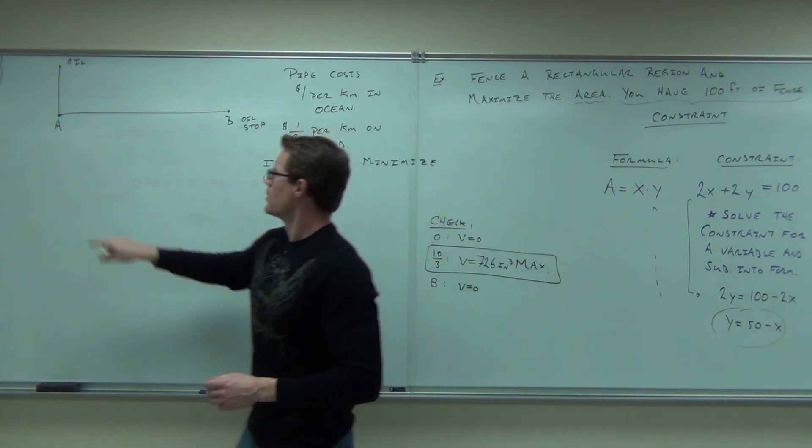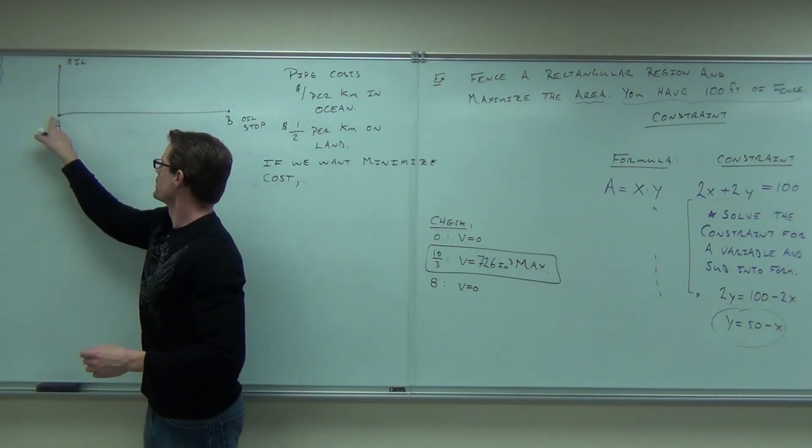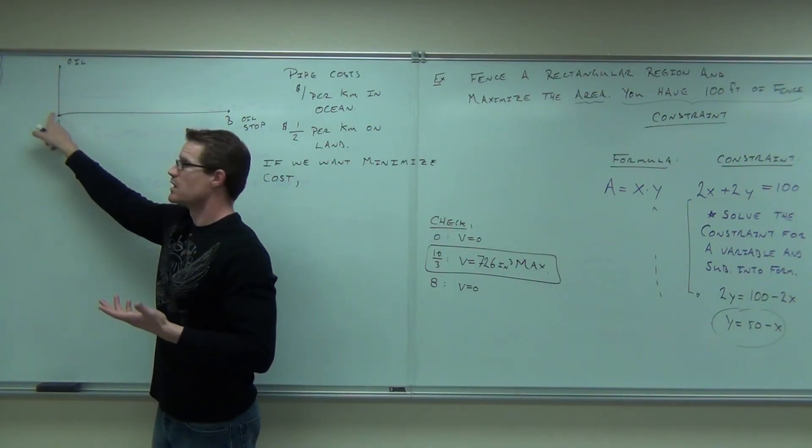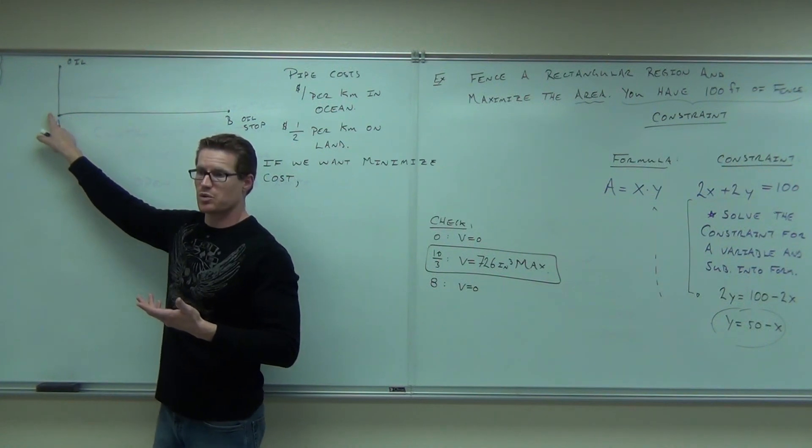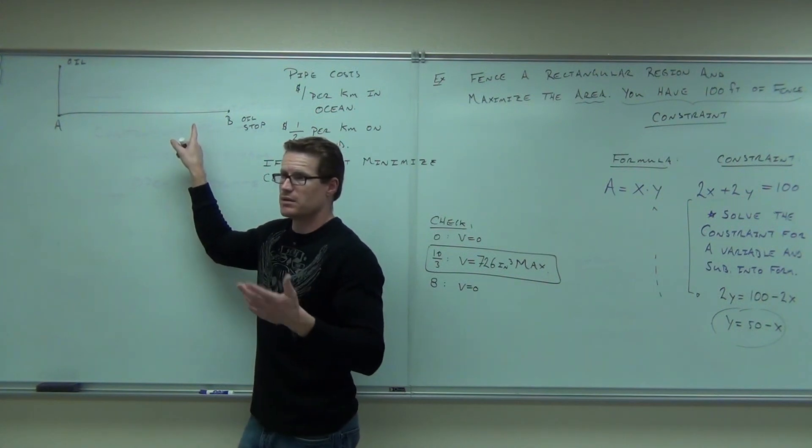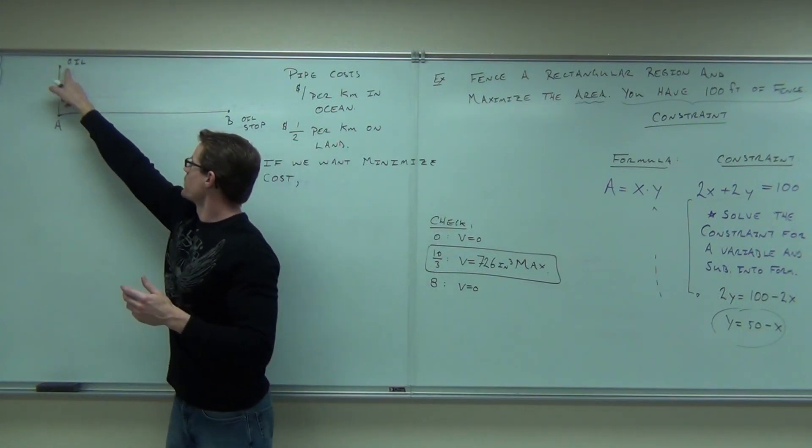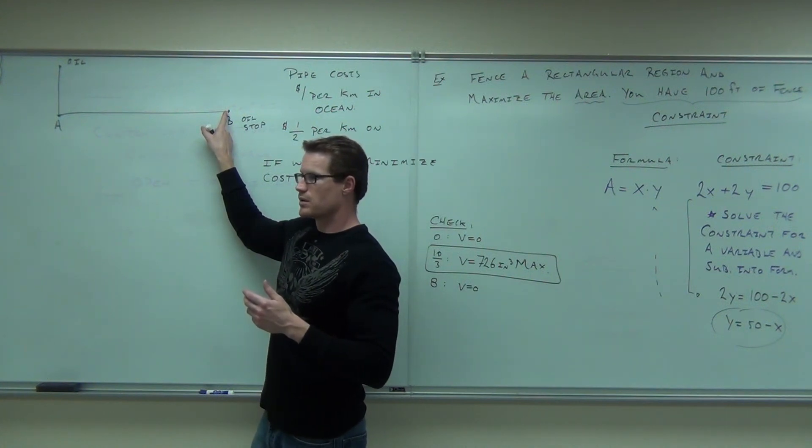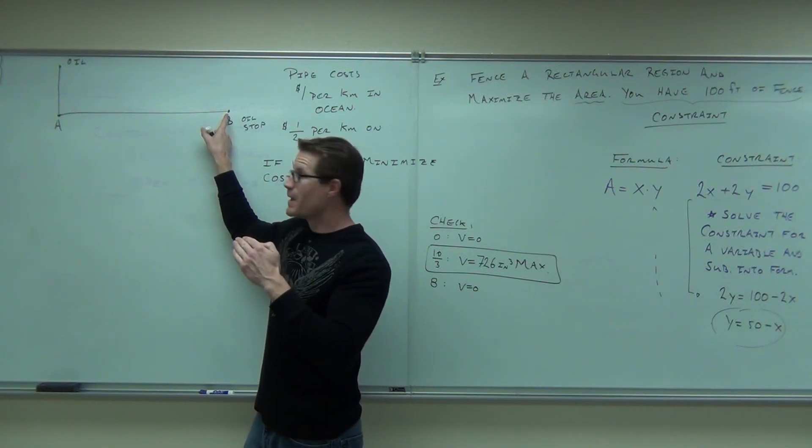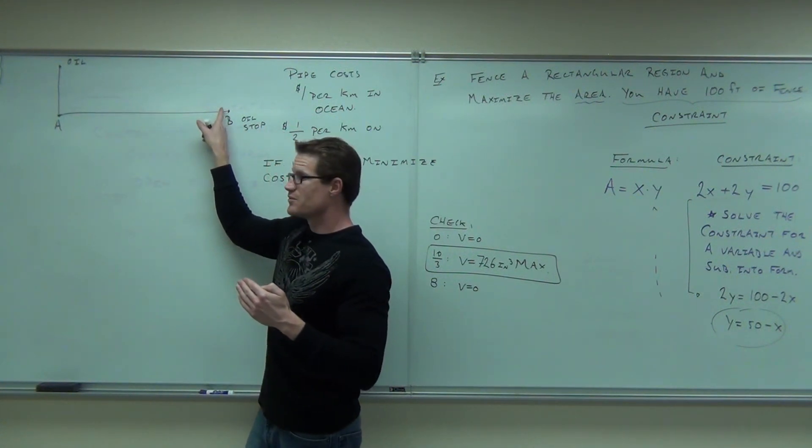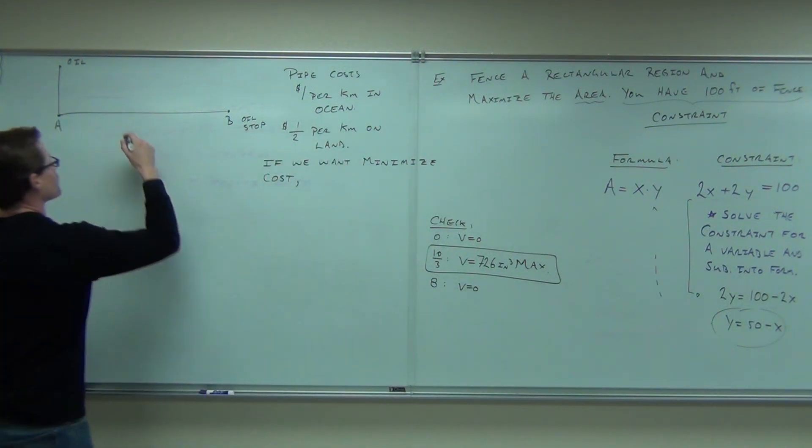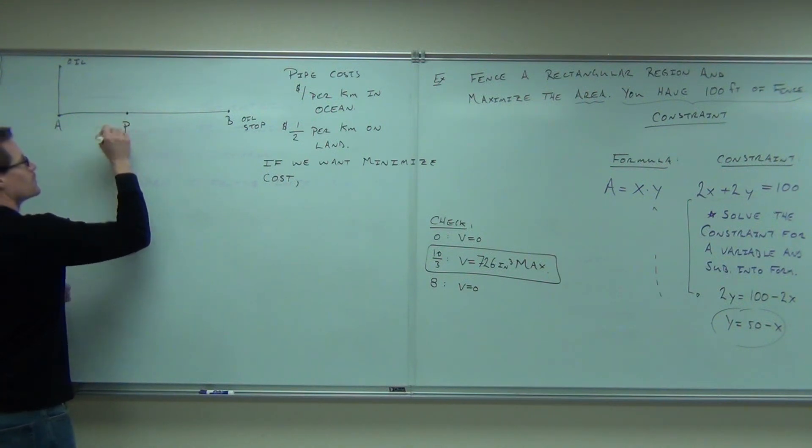Would you go like this? Would you make your oil pipeline here and there? Would you do that? I don't know, it seems to me like that would be the least amount of ocean pipeline, but the most possible land pipeline, wouldn't it? I don't know if that's going to be cost-effective. I have no idea. I really don't know. Would you go straight from the oil to the oil stop? You could. That would be the fastest way, right? The least amount of pipe in general. But this is the most expensive pipe you can lay, but this would be less expensive. So chances are we're going to come to some point.